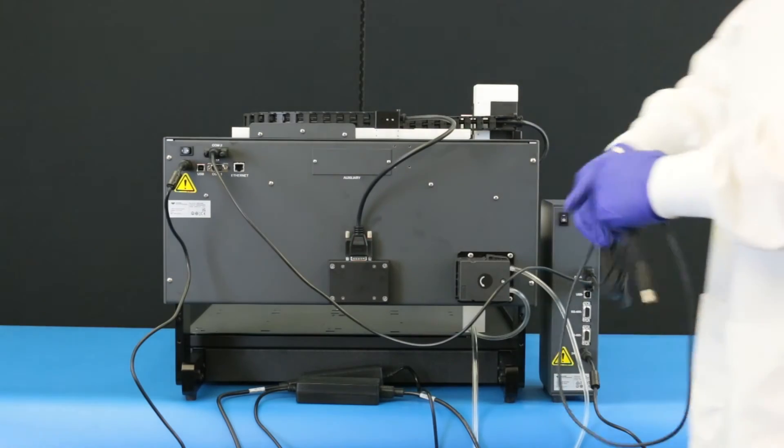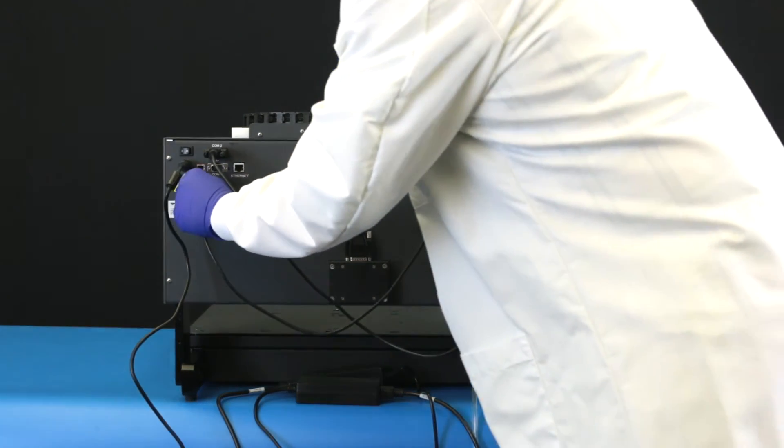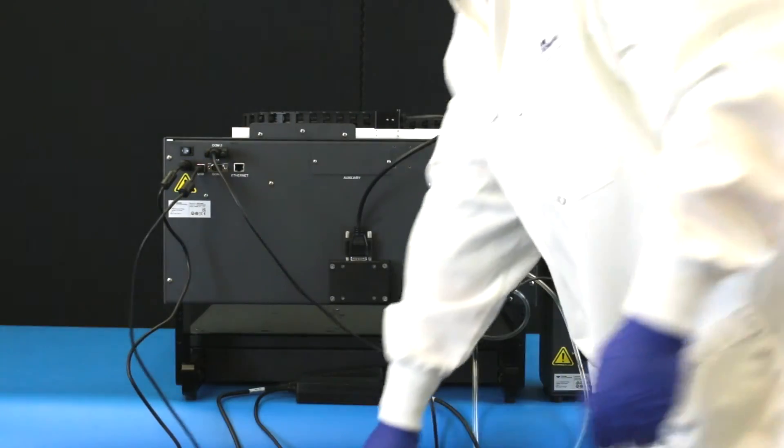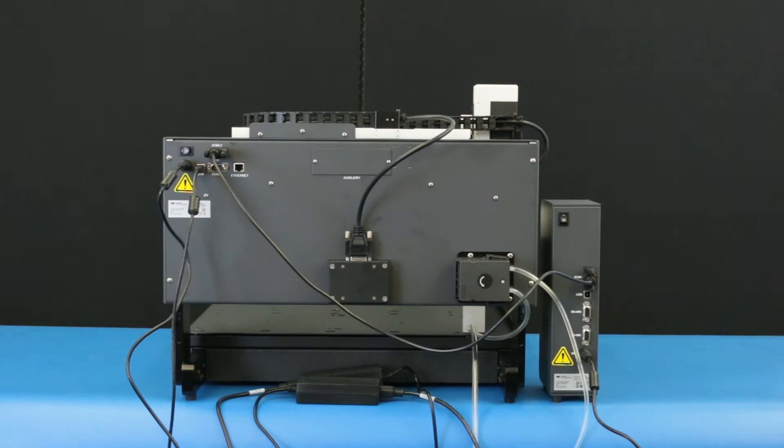Connect a USB cable between the computer and the autodiluter. Windows will automatically install the driver and assign a COM port number. Make a note of the number assigned.